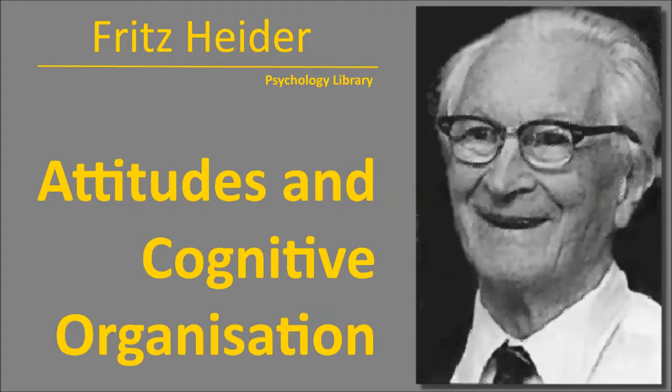The hypothesis may be stated in greater detail. A: a balanced state exists if an entity has the same dynamic character in all possible respects — e.g., if P admires and at the same time likes O. B: a balanced state exists if all parts of a unit have the same dynamic character, i.e., if all are positive or all are negative, and if entities with different dynamic character are segregated from each other. If no balanced state exists, then forces towards this state will arise — either the dynamic characters will change or the unit relations will be changed through action or cognitive reorganization. If a change is not possible, the state of imbalance will produce tension.